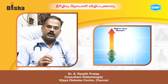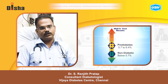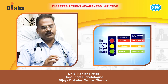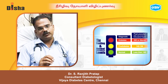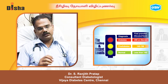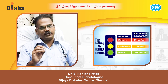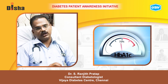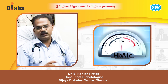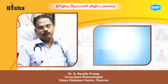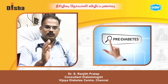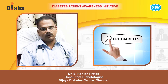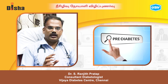Regarding HbA1c, which reflects 3-month average blood sugar, the normal value is about 5.7%. In diabetics, fasting blood sugar is greater than 126 mg/dL and post-meal is greater than 200 mg/dL. The HbA1c threshold for diabetes diagnosis is 6.5%.